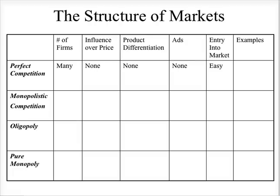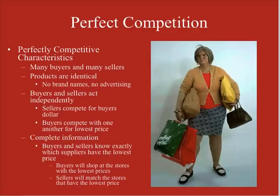The first one we're going to study is perfect competition. There are many different firms in a perfectly competitive market. They have zero influence over price. For product differentiation, there's no differentiation, no advertising used, and entry into the market is very, very easy.